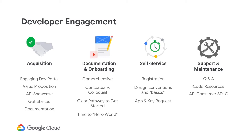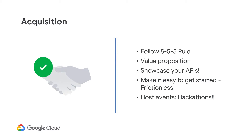Follow the 5-5-5 rule for developer acquisition: grab their attention in the first five seconds, build interest in the next five seconds, and build a case in the next five minutes. Grab their attention by making your storefront visually stunning. Create an API catalog with thorough documentation, making it easy to understand. Ensure you have a compelling value proposition for using your APIs. Create a getting started page with a step-by-step guide. Showcase customer success stories to spark ideas for future innovation. Make it easy to get started — don't hide documentation behind registration; make developers want to register. Finally, get them engaged by hosting events like hackathons.